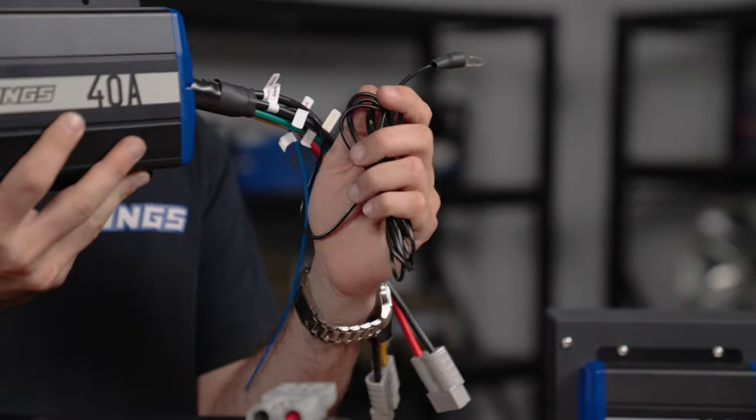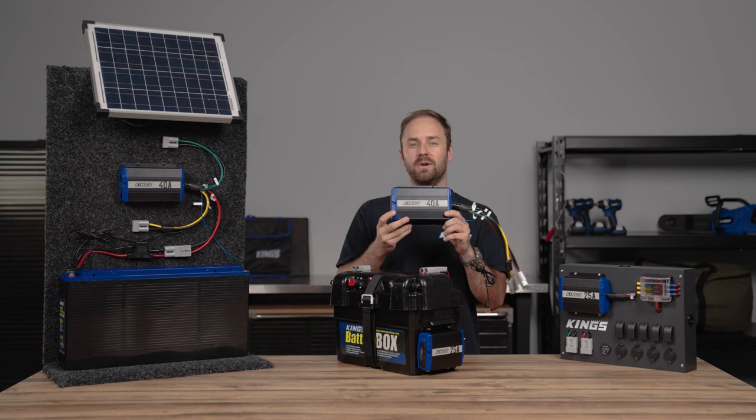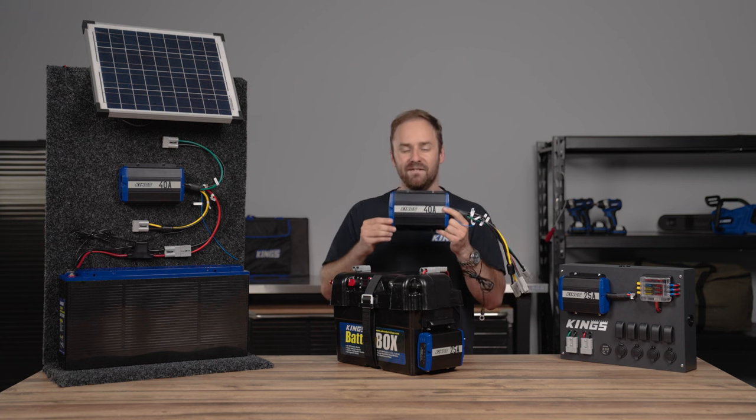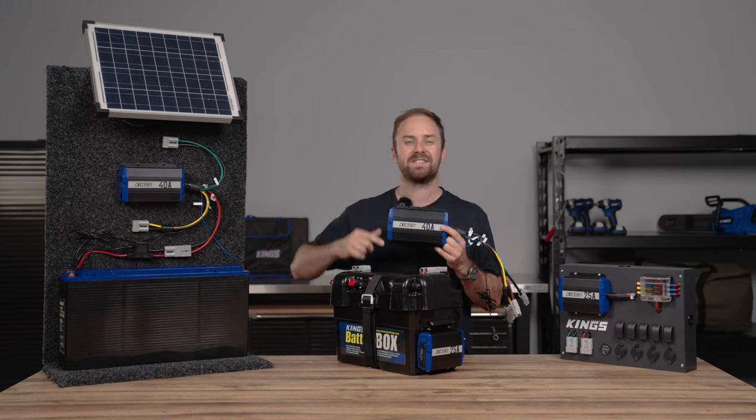They have a 2-meter temperature sensor wire and an ignition wire, which means they're smart alternator compatible. A DC-DC charger is the most efficient and effective way to set up a dual-battery system in your vehicle or trailer, so let's get into it.